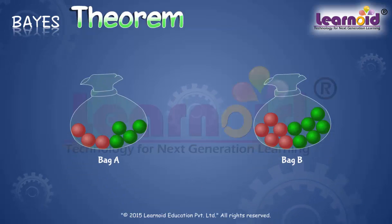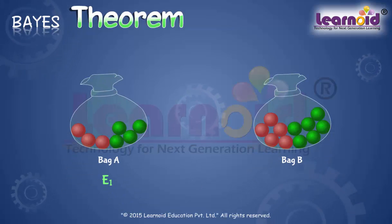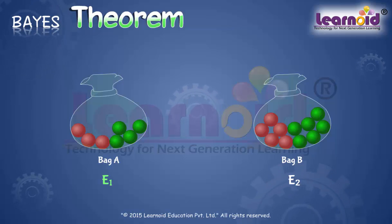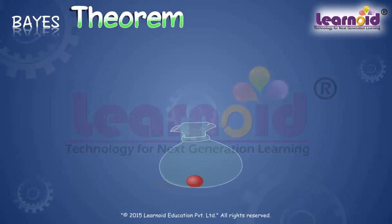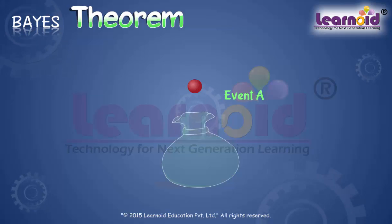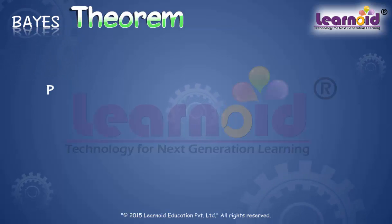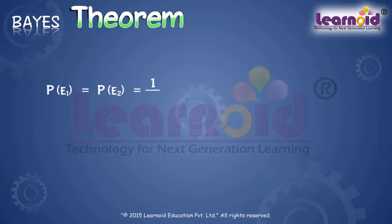To find it, let us assume that E1 is the event of choosing bag A and E2 is the event of choosing bag B. Let A be the event of drawing a red ball. There are two bags, so the probability of choosing bag A or bag B is 1/2.